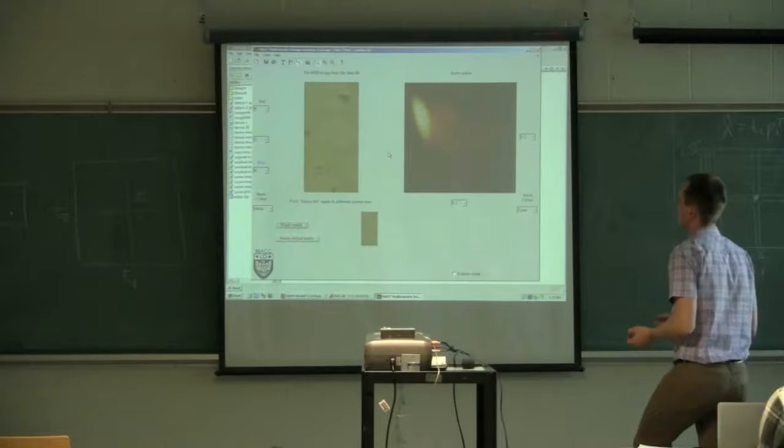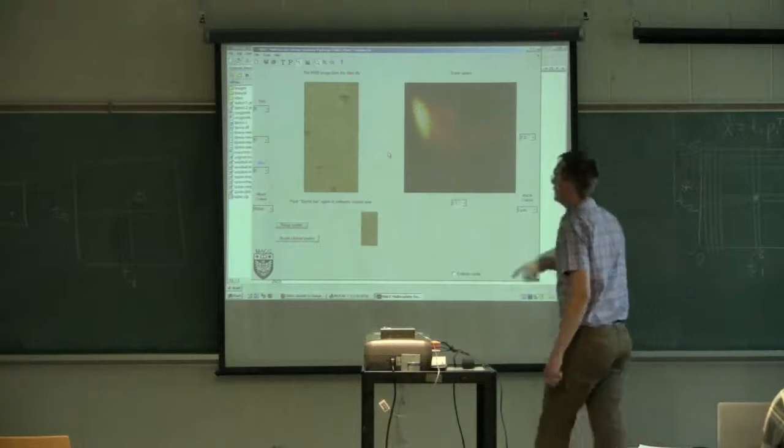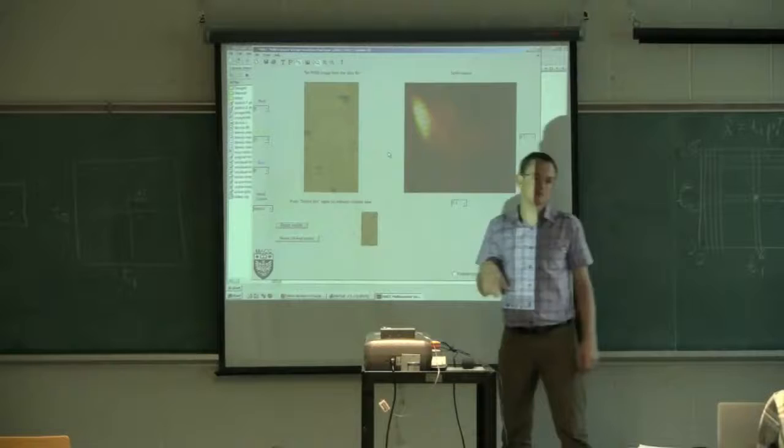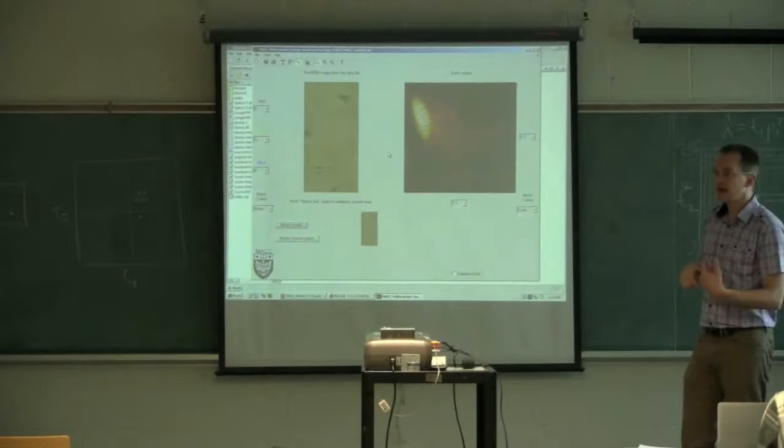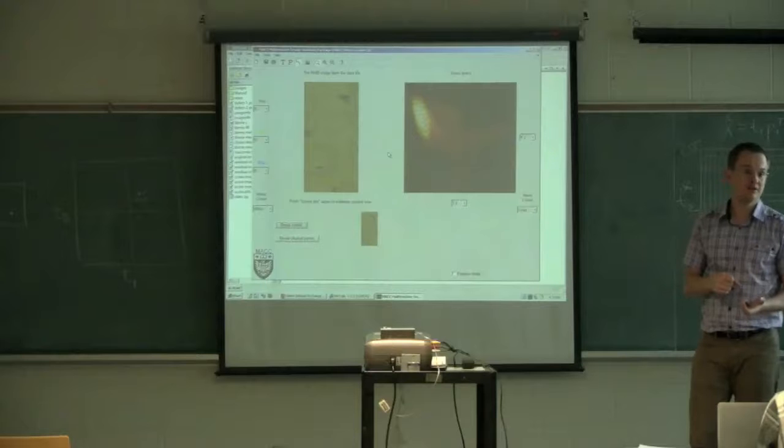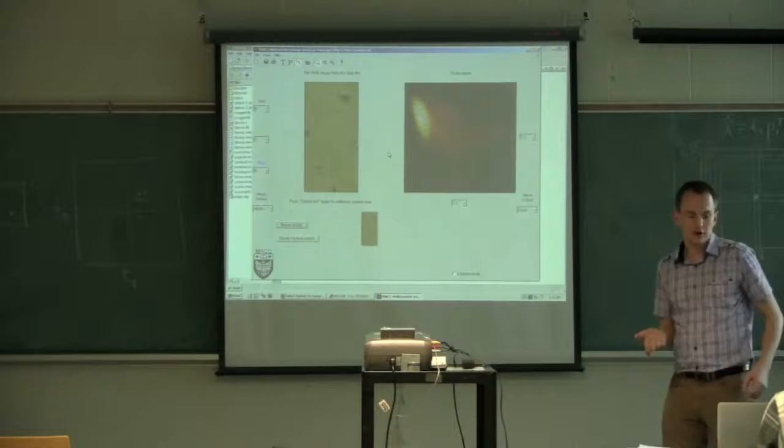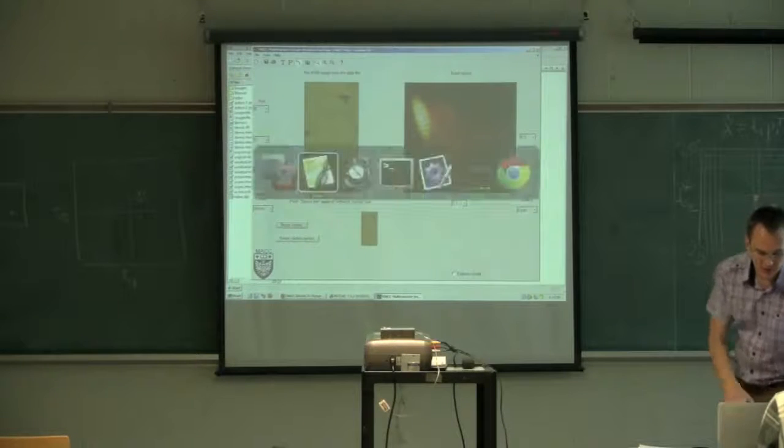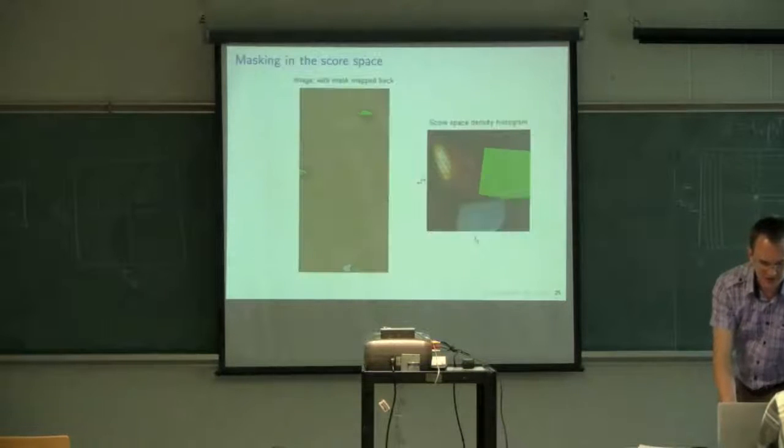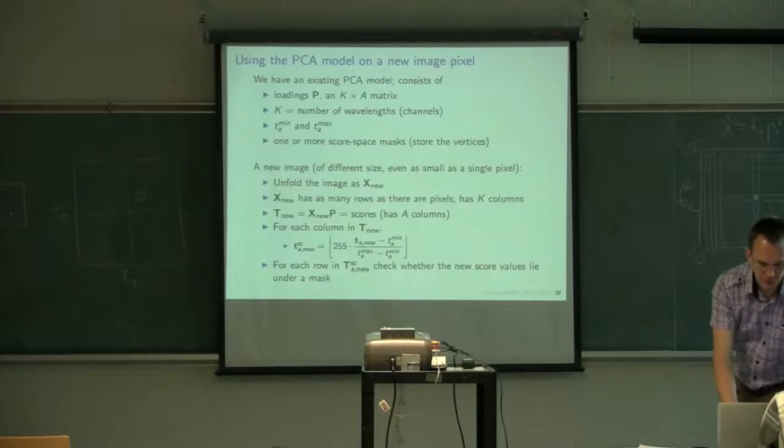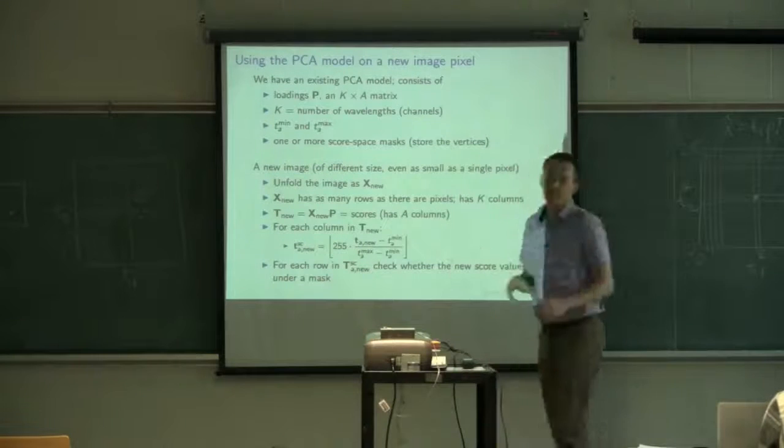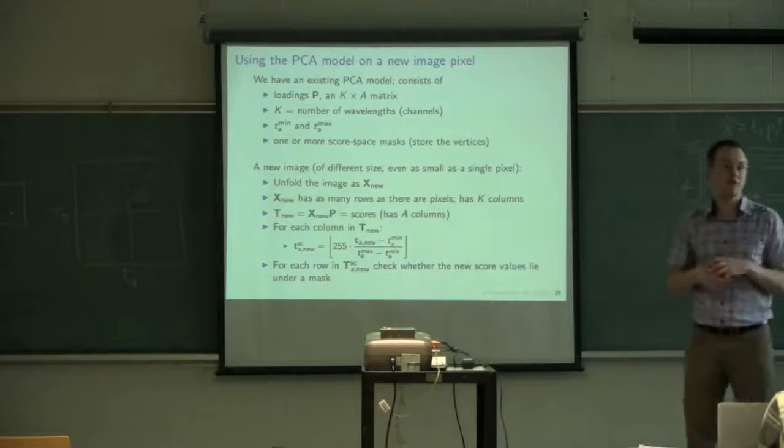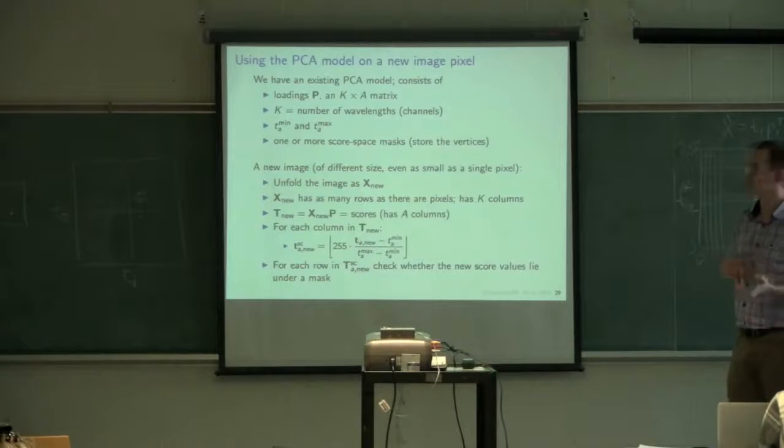So the proof of concept that Manish did in this study here was to have a camera system, and these boards pass by the cameras, and that camera system automatically finds the defects. So how would it work in practice? Well, if we go back here just to the slides, we're using the PCA model on a new image pixel. Imagine you've got a PCA model of what's good pixels and defects, you would use it as follows.